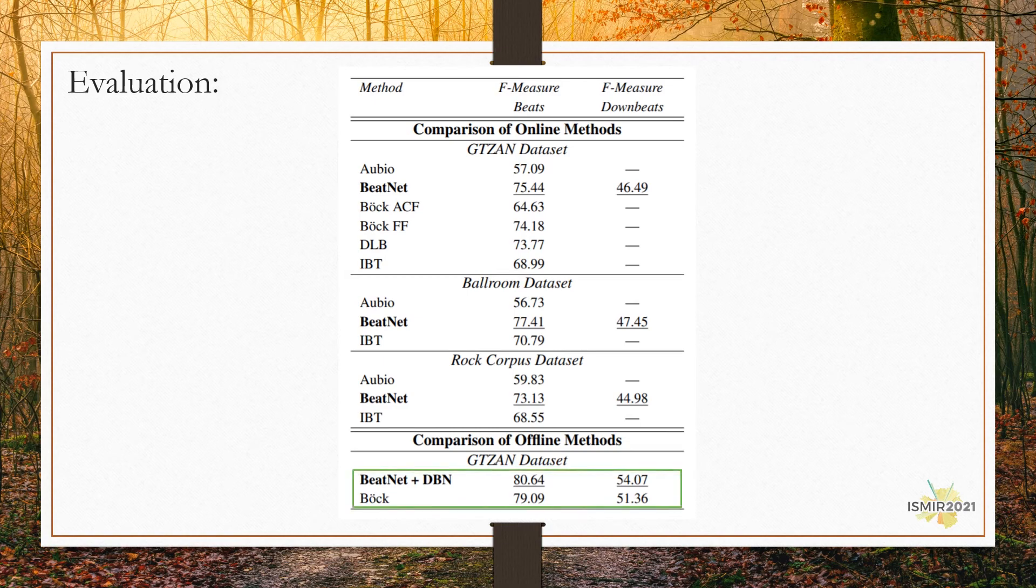In addition, the offline comparison is accomplished to compare the neural network structure of the BeatNet versus a baseline non-causal joint neural network structure by using the same offline inference model.